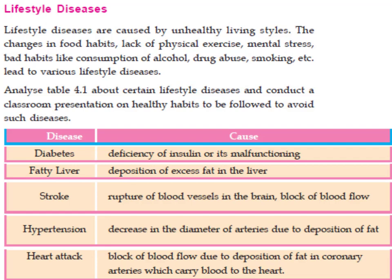A group of cells in the pancreas gland is called the Islets of Langerhans. Beta cells in this structure produce insulin hormone and alpha cells produce glucagon hormone. Deficiency or malfunctioning of insulin leads to diabetes.